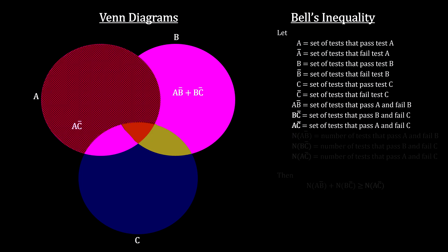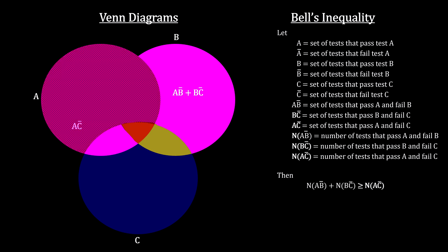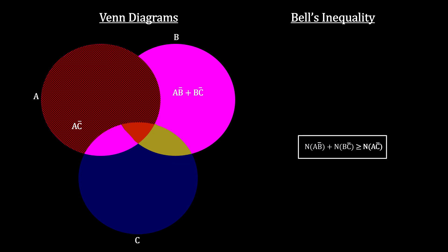From set theory, we know that the number in A not B plus the number in B not C must be greater or equal to the number in A not C. This is the famous Bell inequality.